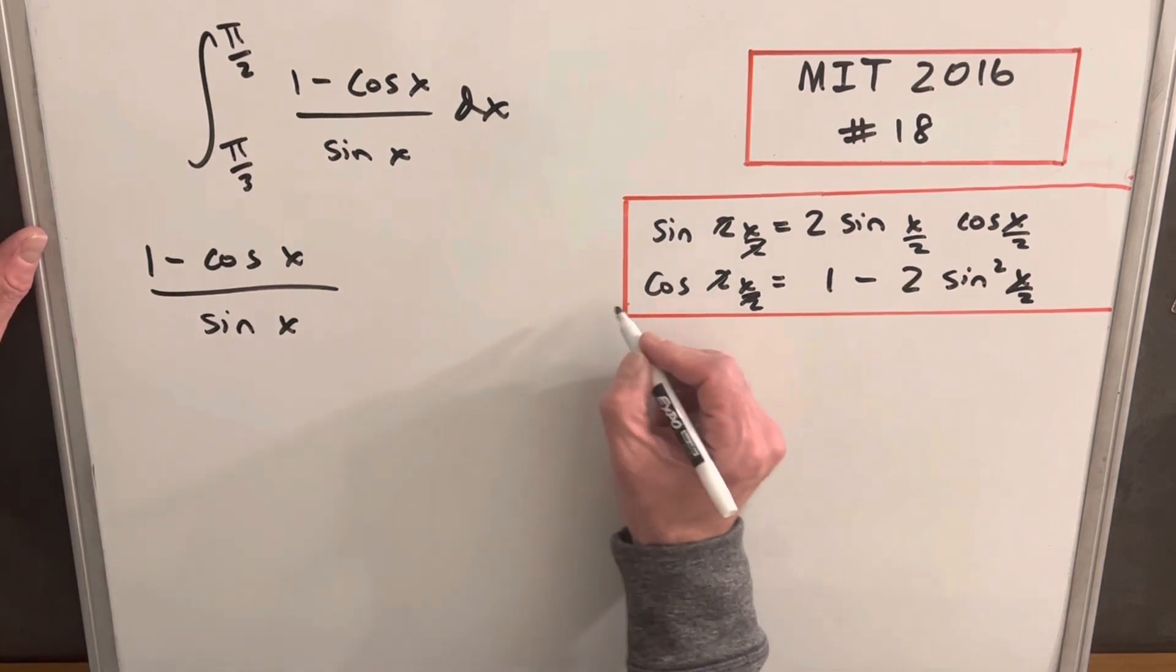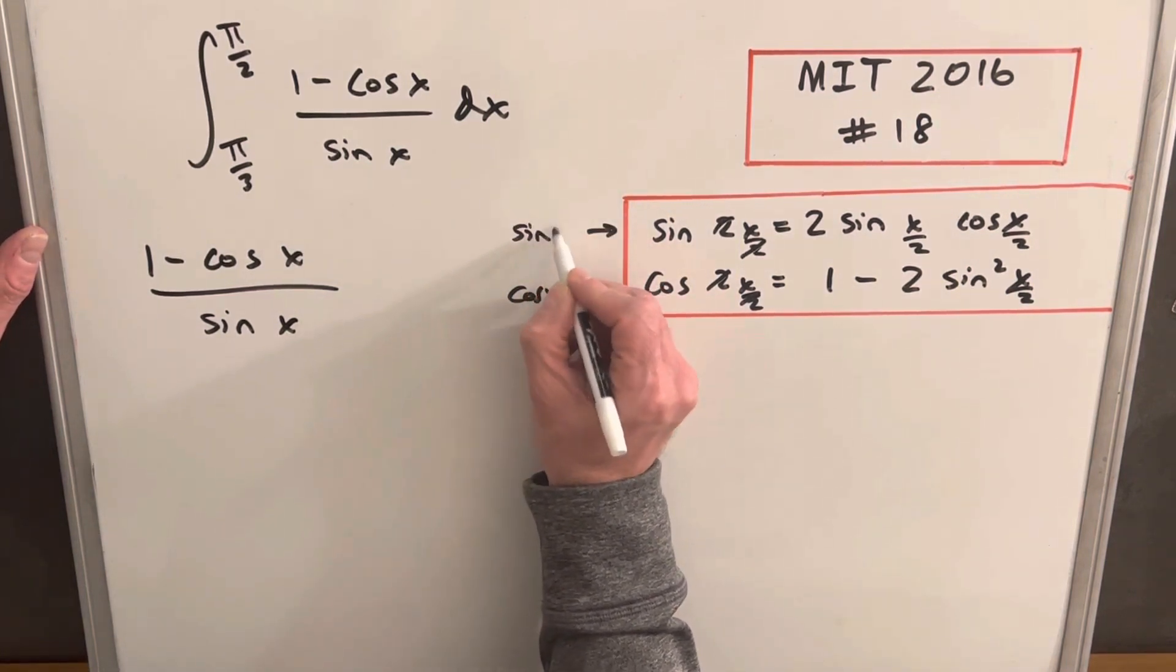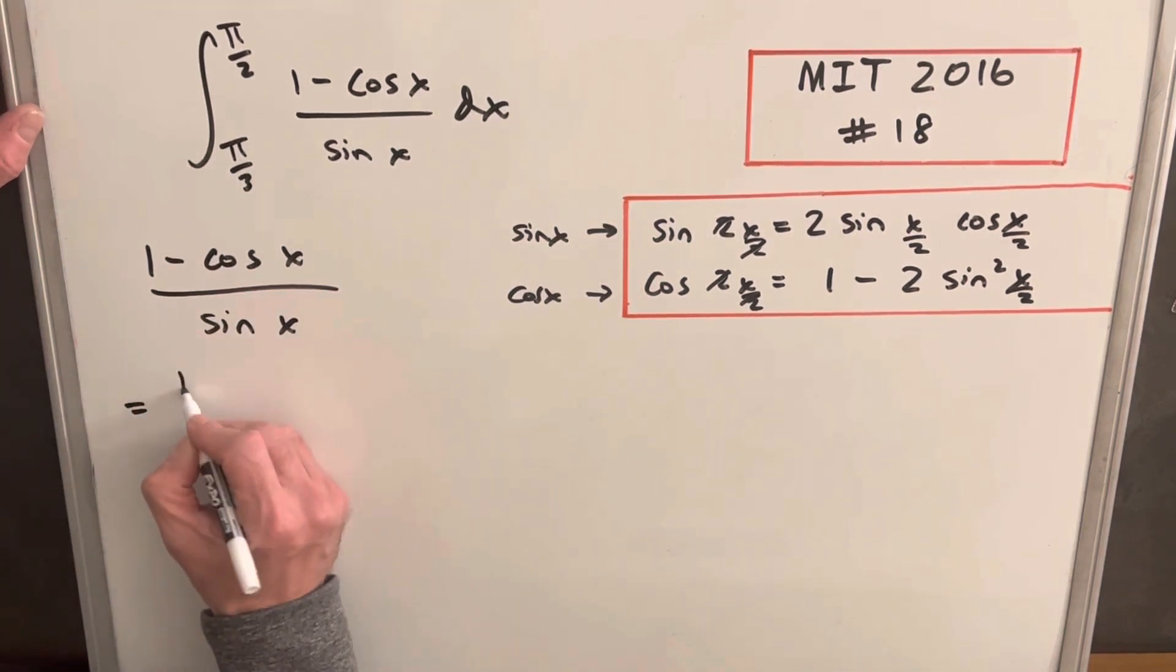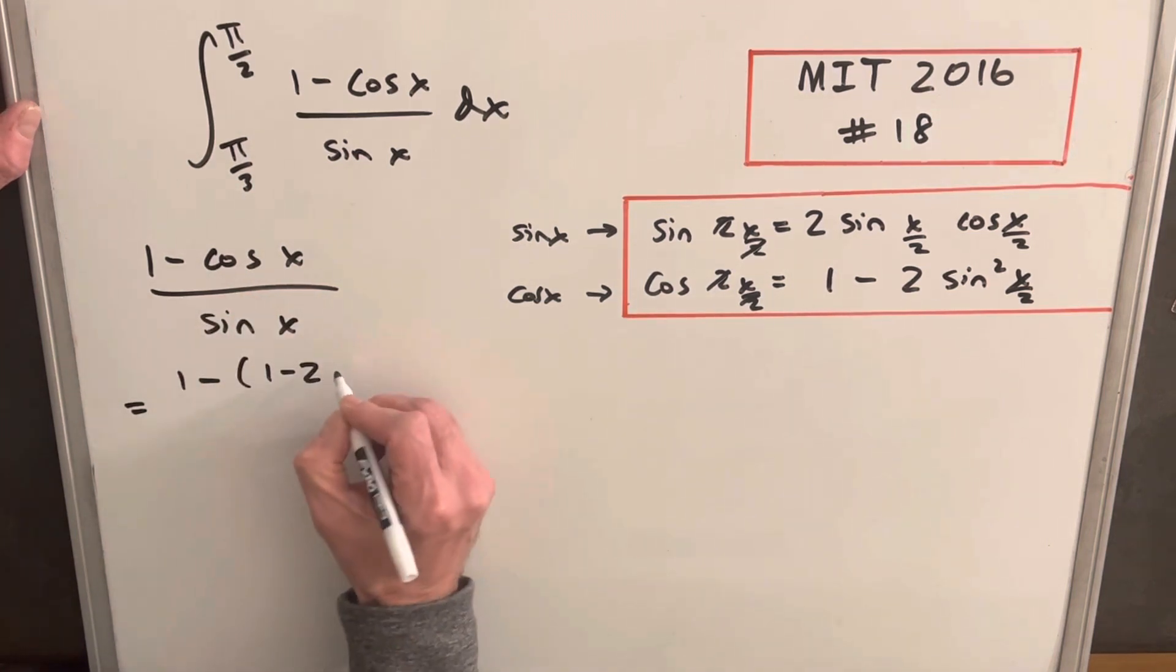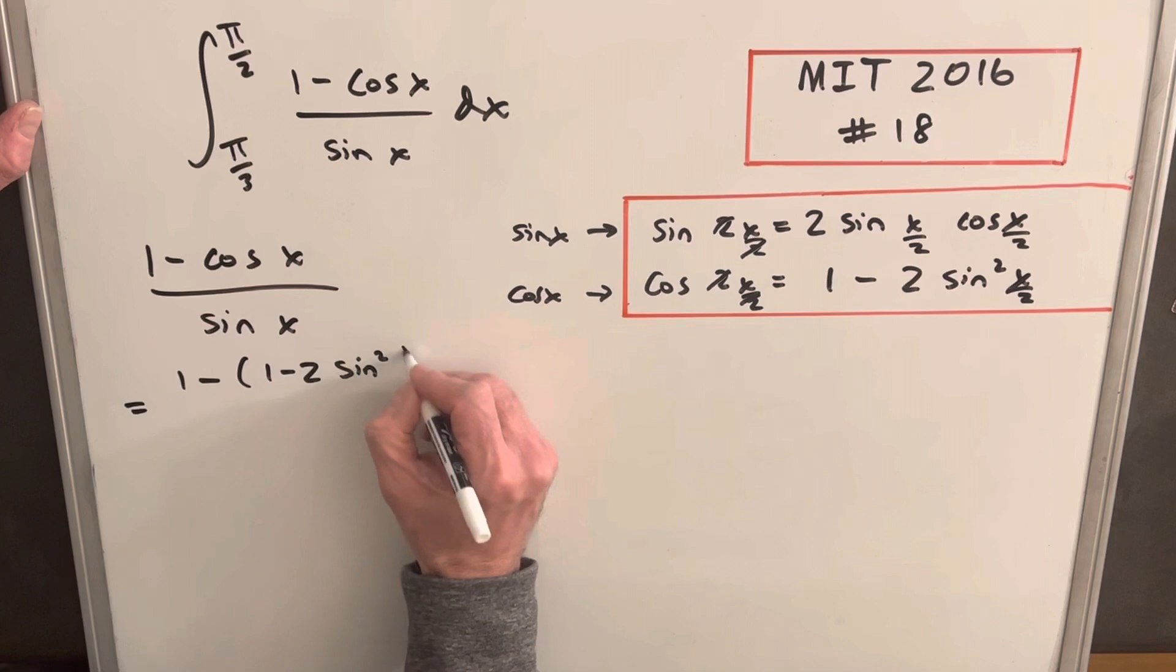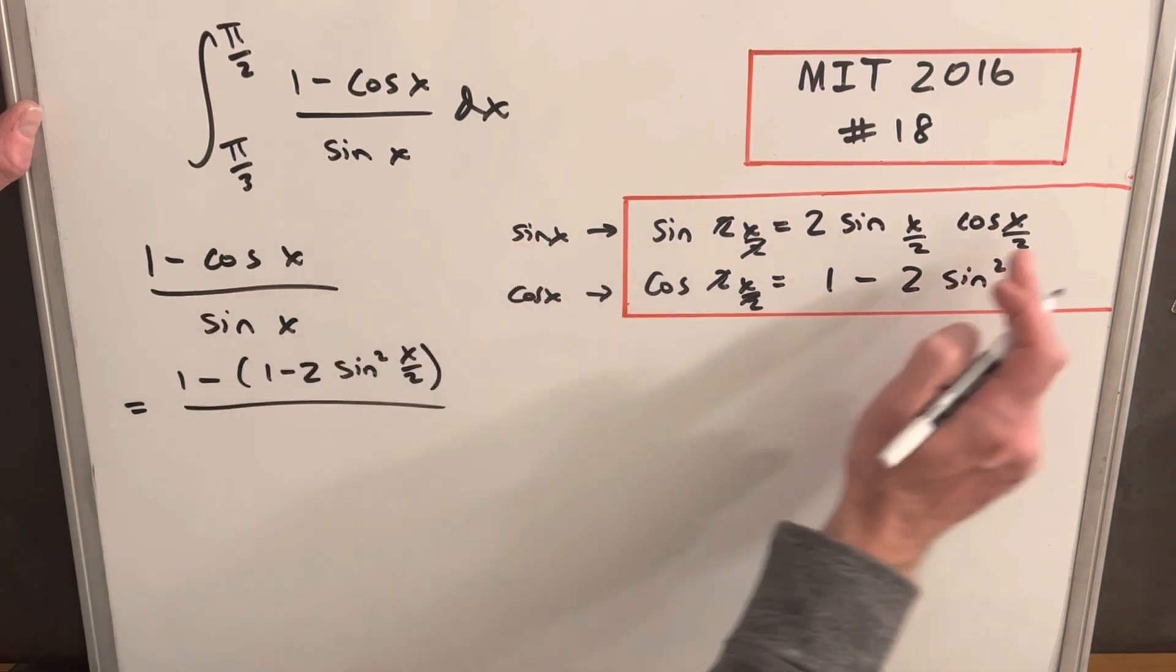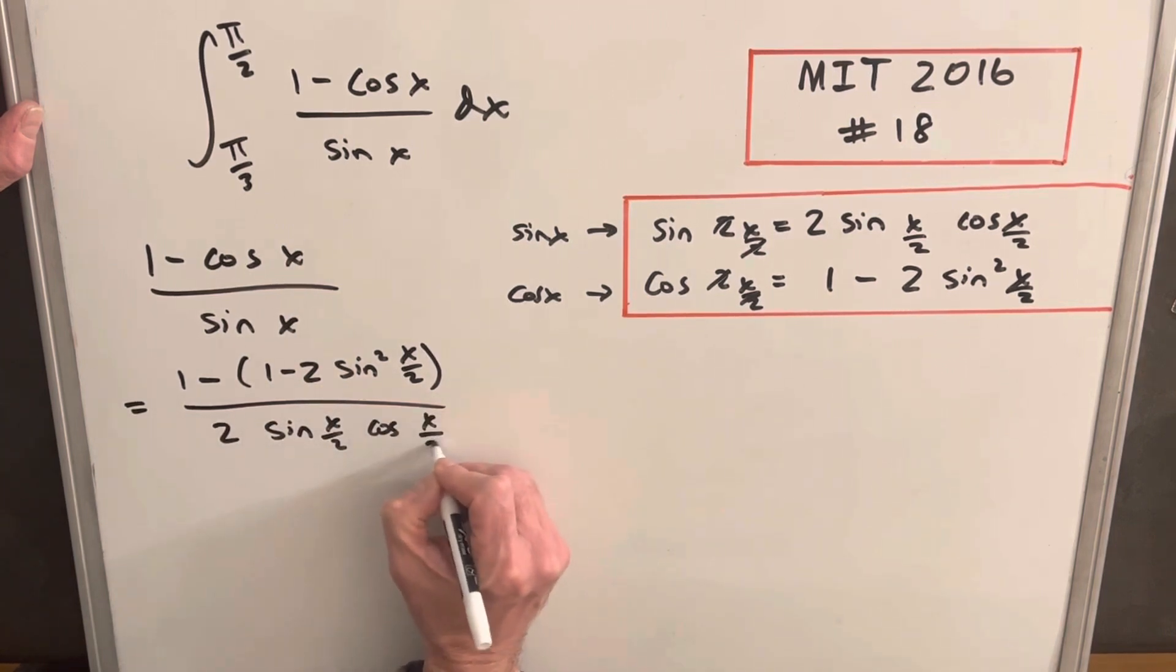And now we have a formula for sine x and cosine x to transfer this into the half angle. So I'm just going to take these values. Just to be clear, this is my cosine x and this is my sine x. So let's just use these values and plug in here to transform this. So we're going to have 1 minus, our cosine formula is going to be 1 minus 2 sine squared x over 2. Sine x, we're going to use this one, 2 sine x over 2 cosine x over 2.